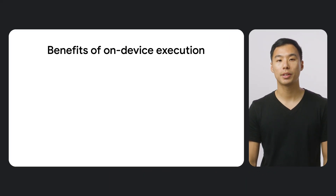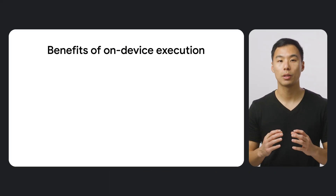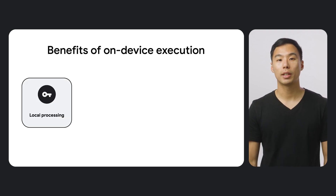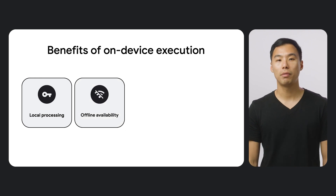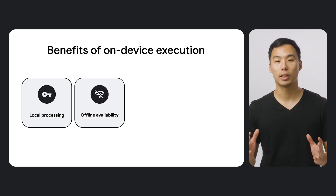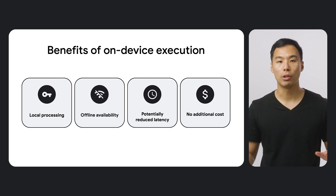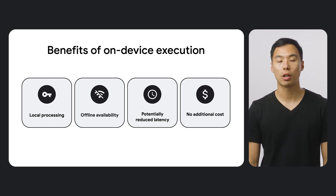First, what is on-device inference, and what are its advantages? On-device Gen AI can process prompts directly on your device without any server calls. This offers several key advantages: sensitive user data is processed locally on the device; the model offers full functionality even with poor internet connectivity; processing on-device can potentially improve latency, enabling real-time responsiveness; and there is no additional monetary cost for each inference because on-device Gen AI runs on user hardware.